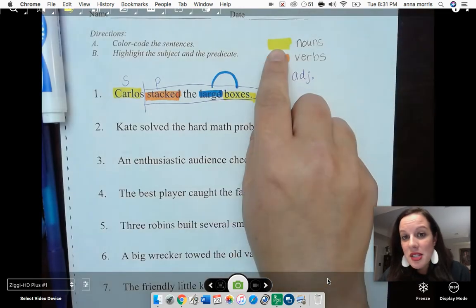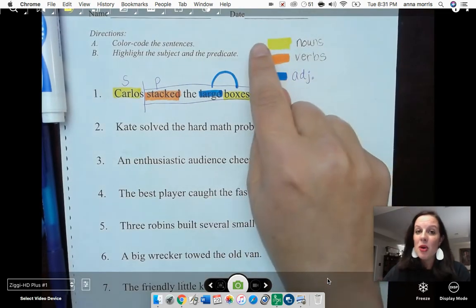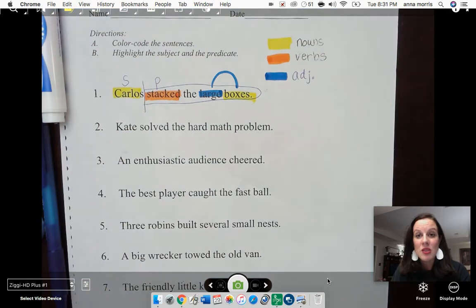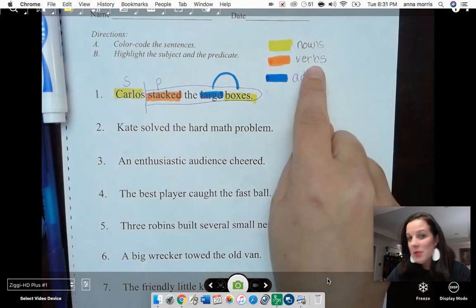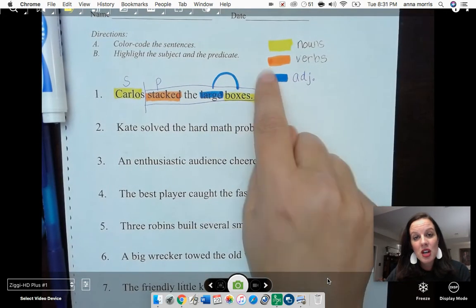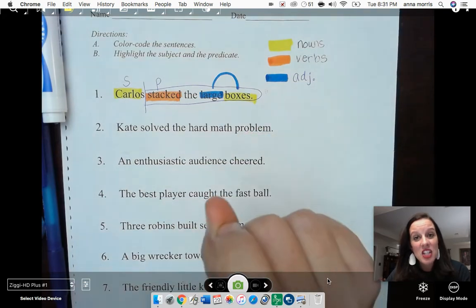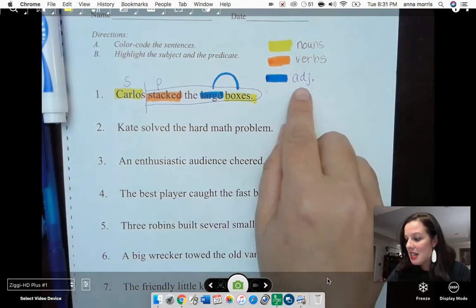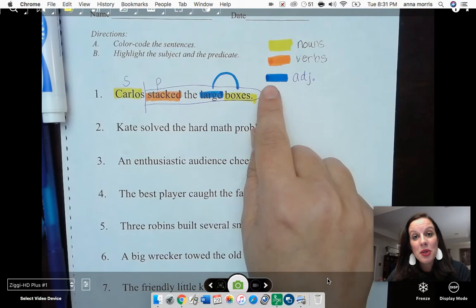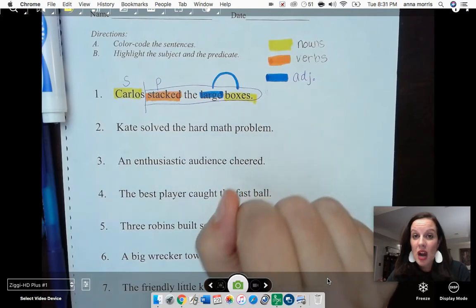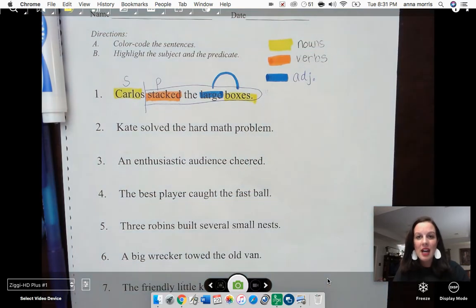Our nouns are going to be yellow. And remember, a noun is a person, place, or thing. Verbs are going to be orange. A verb is an action word. And our adjectives are going to be blue. Adjectives describe nouns, and they tell what kind and how many.